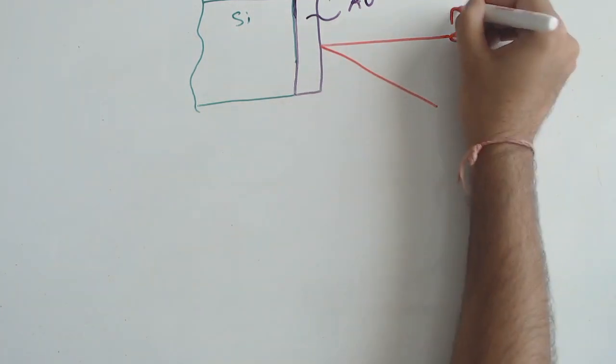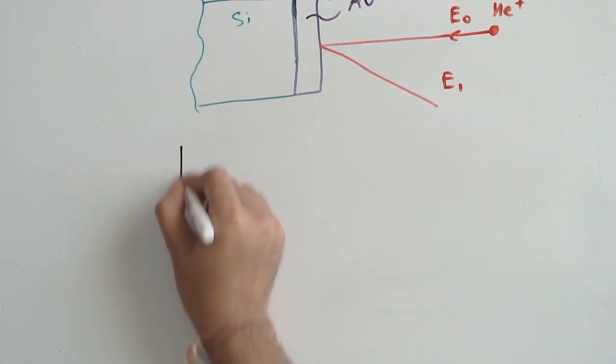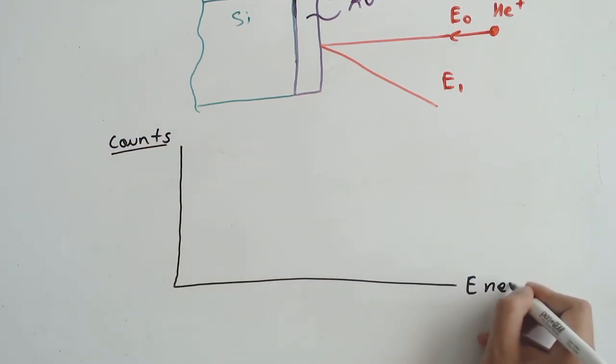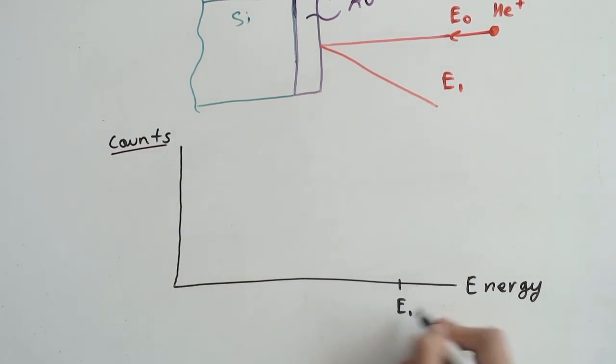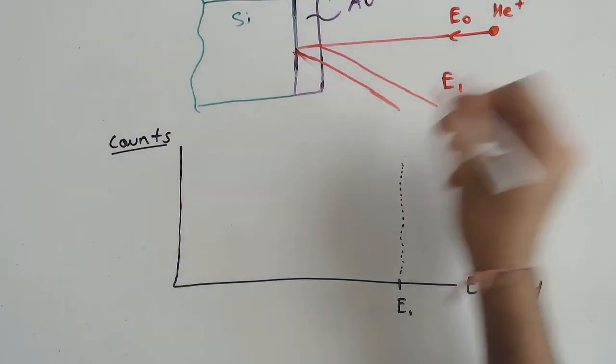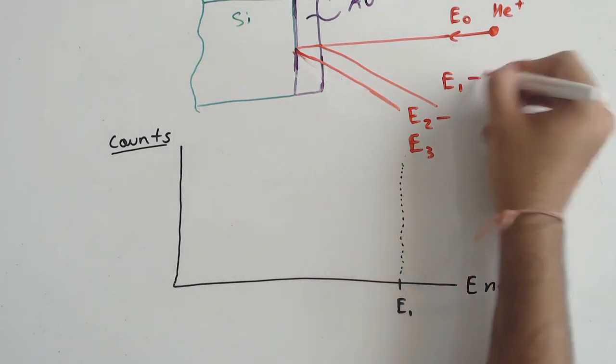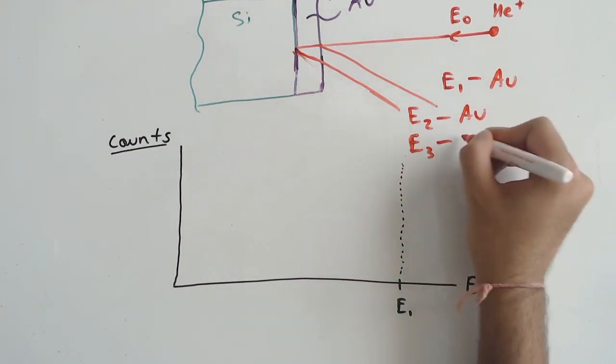The scatter from the surface will show up at a given position on our histogram of counts versus energy. For gold, a somewhat heavier atom, the scatter will yield a decent amount of counts and placement on the energy spectrum. Then, because our gold is some small thickness, we get the backscatter spot of the deep end of the gold a bit lower in energy.